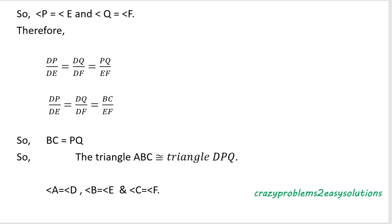Because PQ is parallel to BC, we have BC equal to PQ. So all corresponding sides of triangles ABC and DPQ are equal, meaning triangle ABC is congruent to triangle DPQ. Since they are congruent, the angles are equal: angle A equals angle D, angle B equals angle E, and angle C equals angle F. We have proved that all corresponding angles are equal, and therefore triangles ABC and DEF are similar triangles.